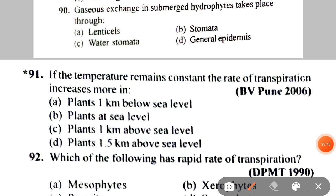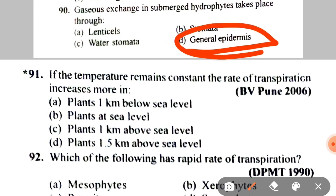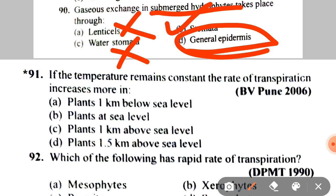Next: gaseous exchange in submerged hydrophytes takes place through A. Lenticels, B. Stomata, C. Water stomata, D. General epidermis. The correct answer is D — general epidermis, because lenticels are only in woody plants, water stomata are not present, and stomata in submerged hydrophytes are absent or non-functional.